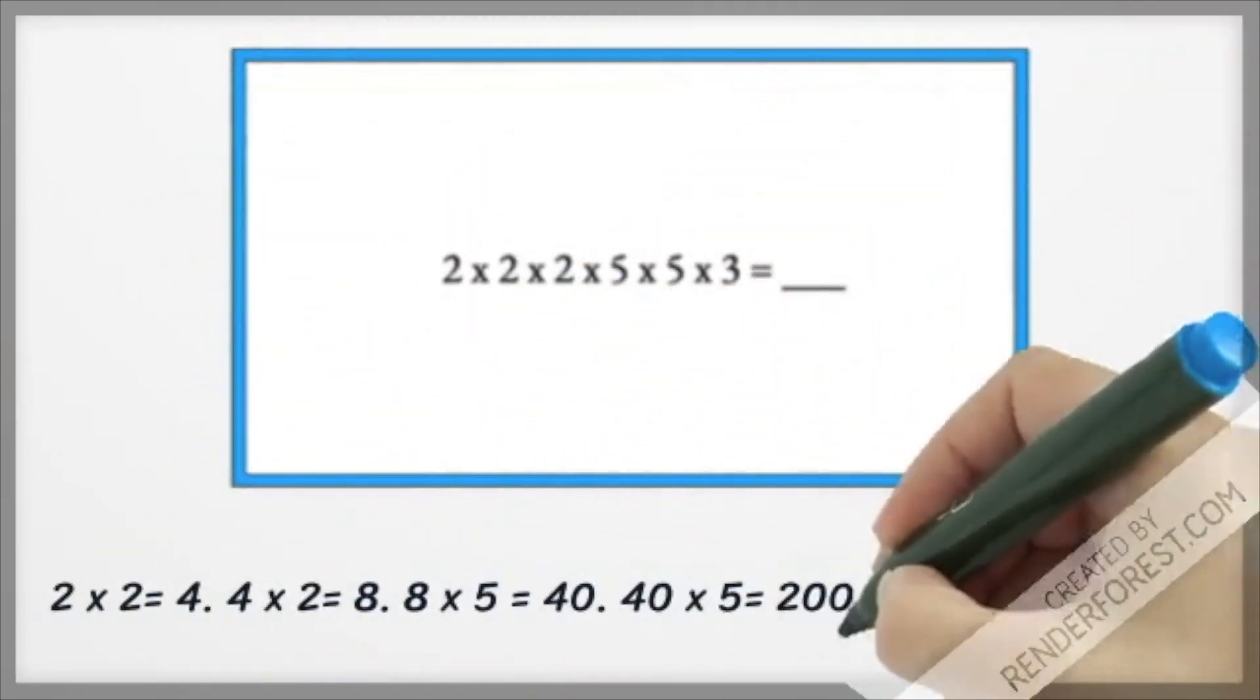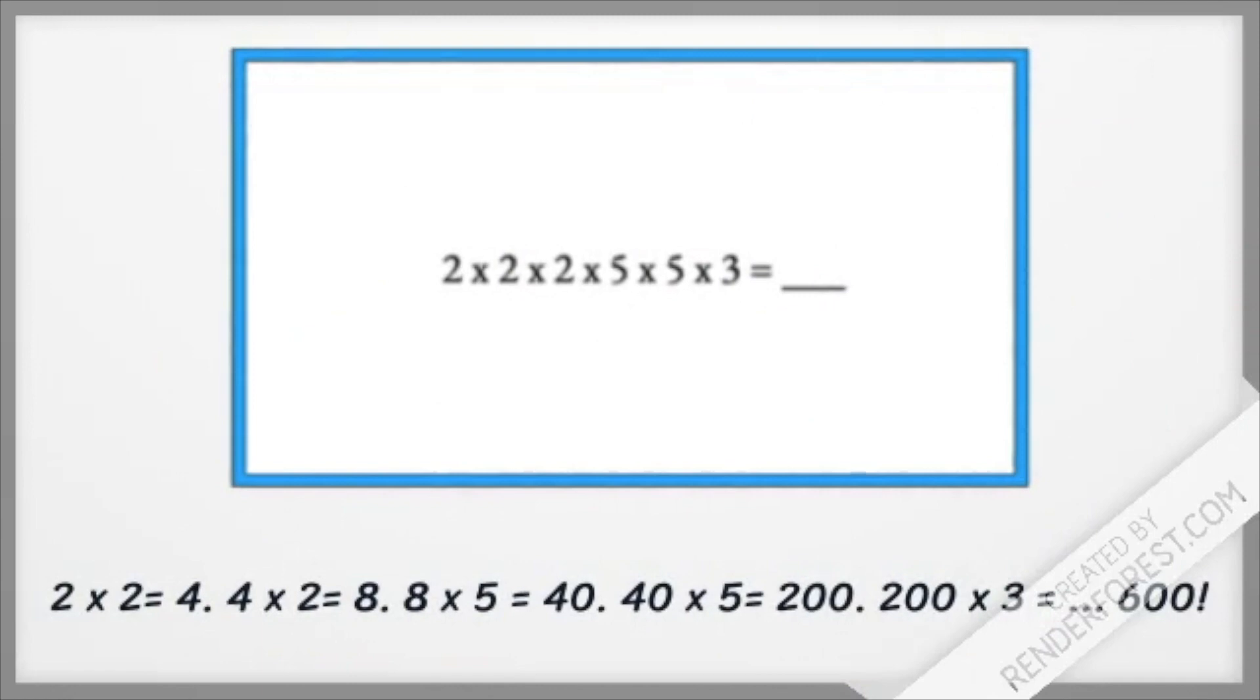2 times 2 equals 4. 4 times 2 equals 8. 8 times 5 equals 40. 40 times 5 equals 200. 200 times 3 equals 600.